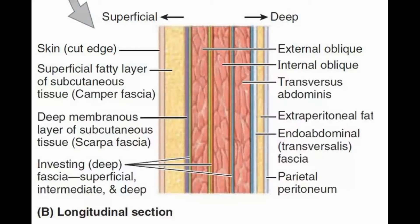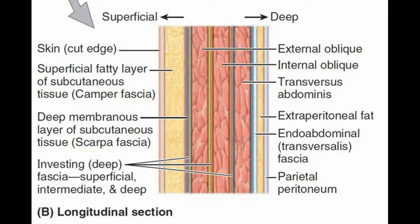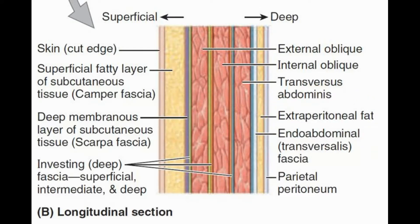Now for the next five deep layers, the mnemonic goes: 'Only One Tiger Entered The Park.' The first O stands for the external oblique muscle, the second O is for the internal oblique, Tiger is for the transversus abdominis, Entered is for the extra-peritoneal fat, and T stands for the transversalis fascia.